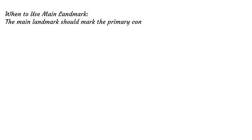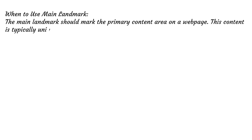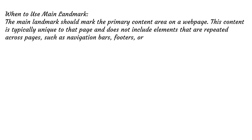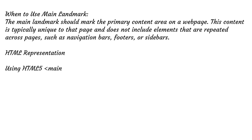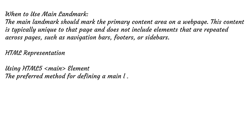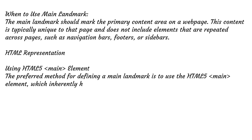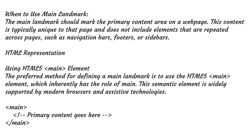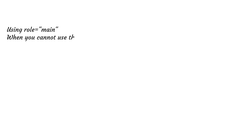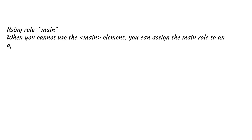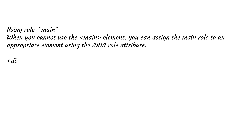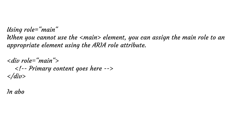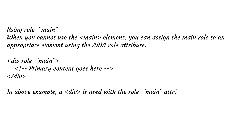When to use the main landmark: The main landmark should mark the primary content area on a web page. This content is typically unique to that page and does not include elements repeated across pages, such as navigation bars, footers, or sidebars. HTML representation — using the HTML5 main element: The preferred method is to use the HTML5 main element, which inherently has the role of main and is widely supported by modern browsers and assistive technologies. When you cannot use the main element, you can assign the main role using the ARIA role attribute — a div used with role="main" denotes the main content area.